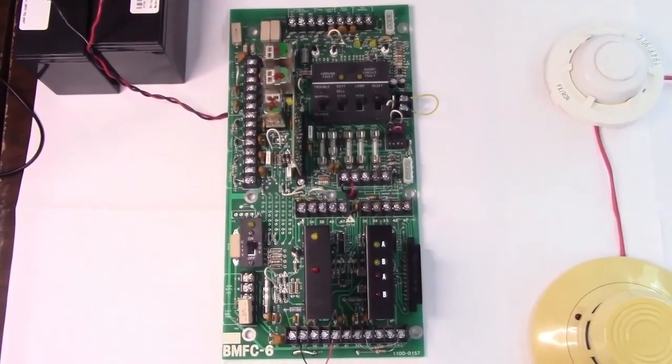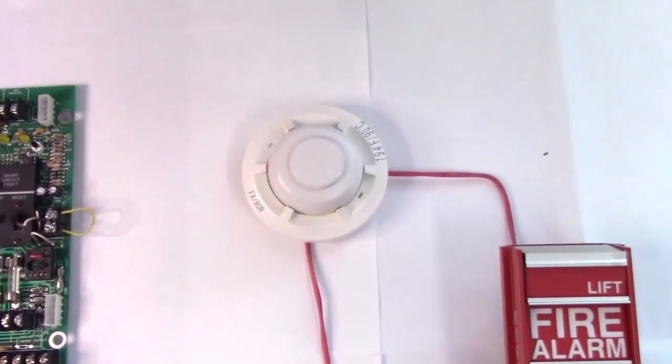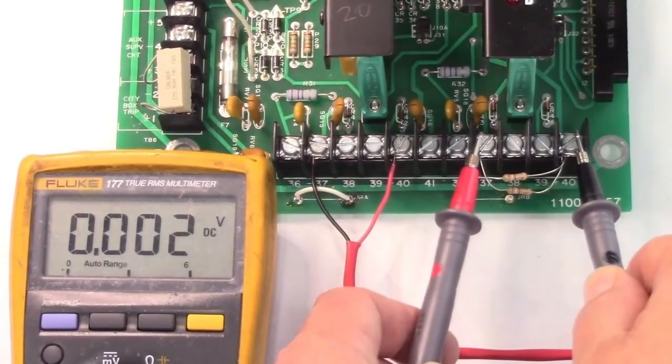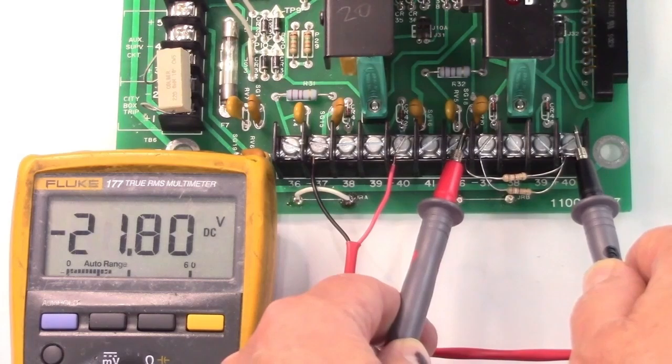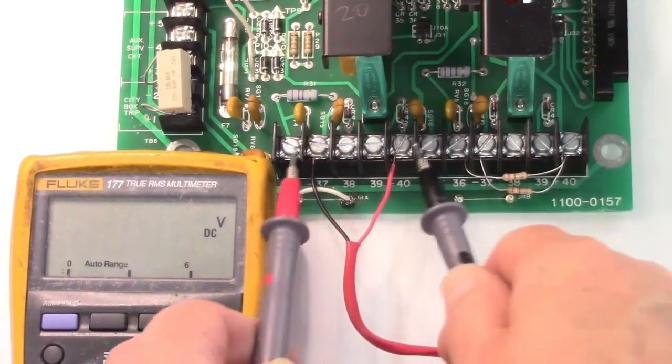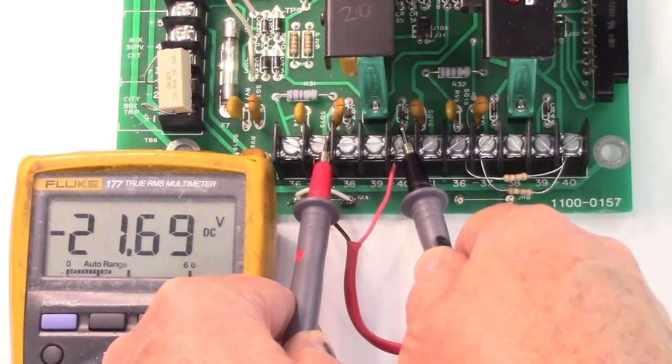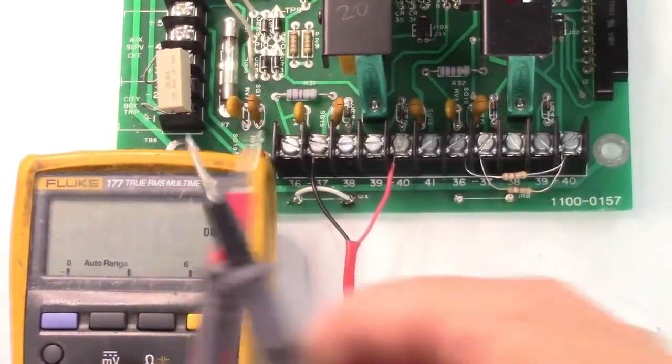This is an FC72 main board and it's wired to a smoke detector, heat detector, and a pull station. The normal zone voltage across an end of line resistor is 21.8 on this panel. And if we measure the other one, we'll read a little bit less because of the additional current draw of the smoke detector. The more smoke detectors, the more current draw.